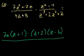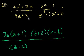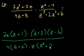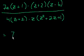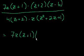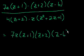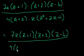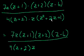We can also factor out a z from the second denominator, giving z times z squared plus 2z plus 1. Now let's rewrite everything: the numerator is 7z times z plus 1 times z plus 2 times z minus 2, all over 4 times z plus 2 times z. And z squared plus 2z plus 1 factors as z plus 1 squared — that is z plus 1 times z plus 1.